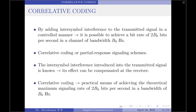Until our previous video we have discussed intersymbol interference as an undesirable phenomenon that produces a degradation in the overall system performance. However, by adding intersymbol interference to the transmitted signal in a controlled manner, it is possible to achieve a bit rate of 2V₀ bits per second in a channel that has a bandwidth of only V₀ hertz. Such schemes are called correlative coding schemes, also known as partial response signaling schemes.